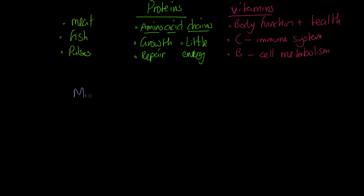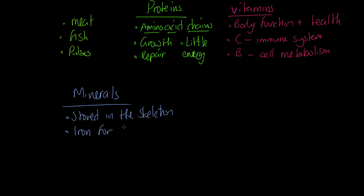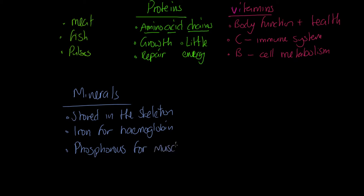Minerals are often lumped in with vitamins, but a couple of important things to note. They are stored in the skeleton in small quantities. Iron, for example, is needed for hemoglobin — the heme groups on hemoglobin give red blood cells their oxygen-carrying capacity, and we get iron from leafy green vegetables and liver. Phosphorus is important for muscle function and reducing muscle pain. Calcium is important for bones and teeth, and we get a lot of calcium from dairy products.